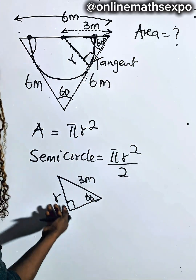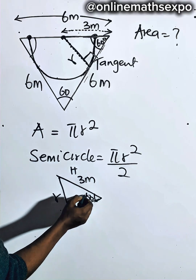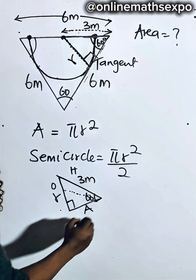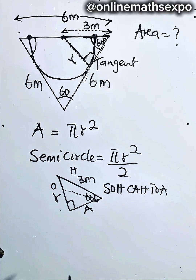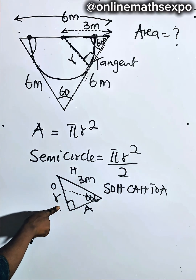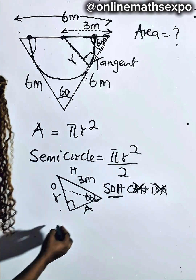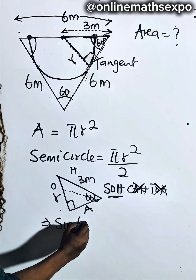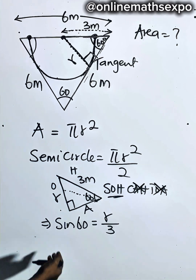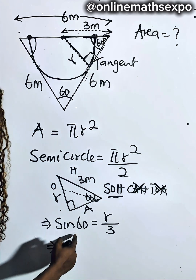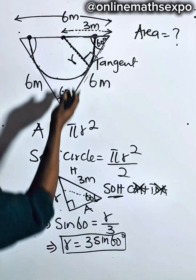We have the hypotenuse (3 meters) and we are looking for the opposite side (R). The trig ratio that involves opposite and hypotenuse is sine. So we apply: sin(60°) = R / 3. Multiplying both sides by 3 gives us R = 3 sin(60°). This is the radius of the semicircle.